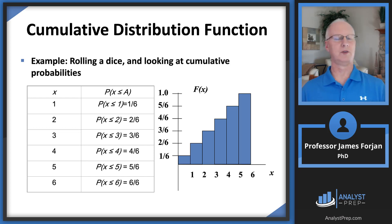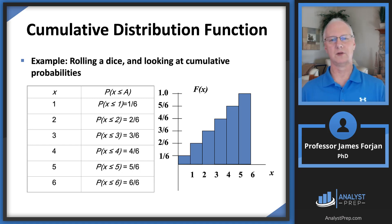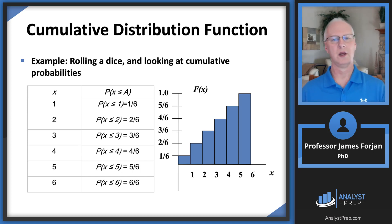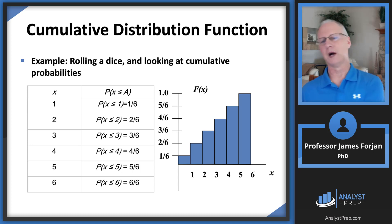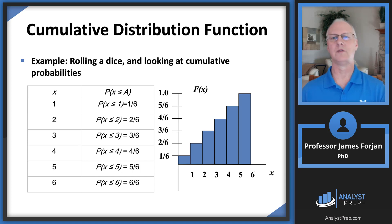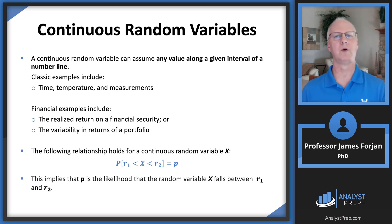The cumulative distribution function is exactly what the name suggests — it's cumulating all of the possibilities. What's the probability you roll a one? That's one-sixth. A two or a one? Two out of six. A three, two, or one? Three-sixths. You accumulate those things from the first possibility out to the sixth, and up the vertical axis it sums to 100%. The CDF can be applied to a discrete random variable, but it's very different from a continuous random variable, which can take any value along a given interval of a number line.